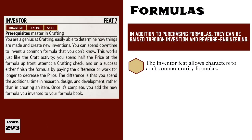The Inventor feat is available starting at 7th level for those who have at least master proficiency in crafting. With this feat, a character can spend downtime to create their own formulas instead of buying them. The only real requirement worth mentioning is that the formula must be for a common rarity item. There are no other hard requirements, but I think a GM would be within their right to say that you can only create a formula for something that you can actually craft. For example, you would need the Magical Crafting feat to create the formula for a magic potion. Again, that is not a strict rules-as-written interpretation, but as a GM, I just think that that is logical.